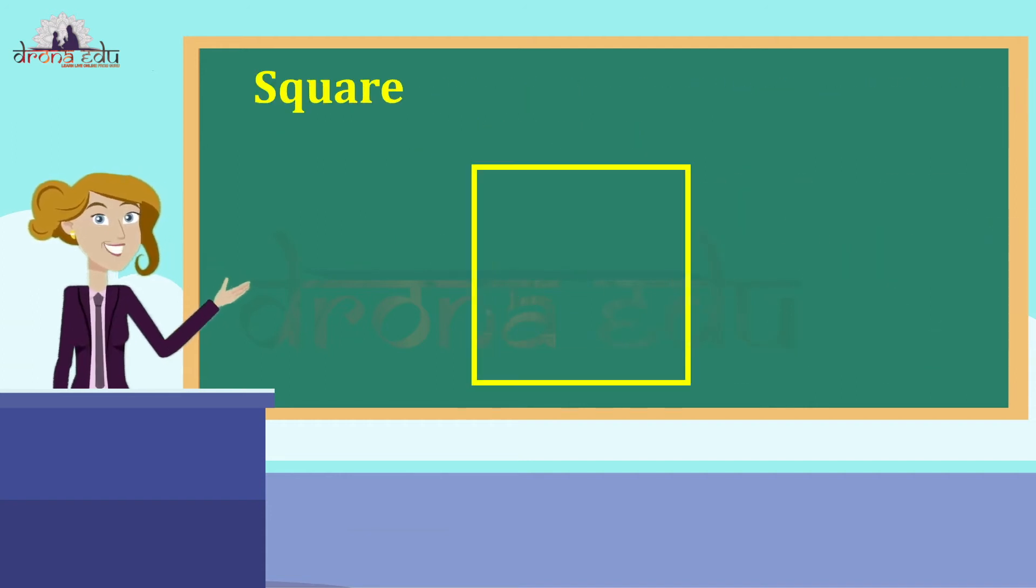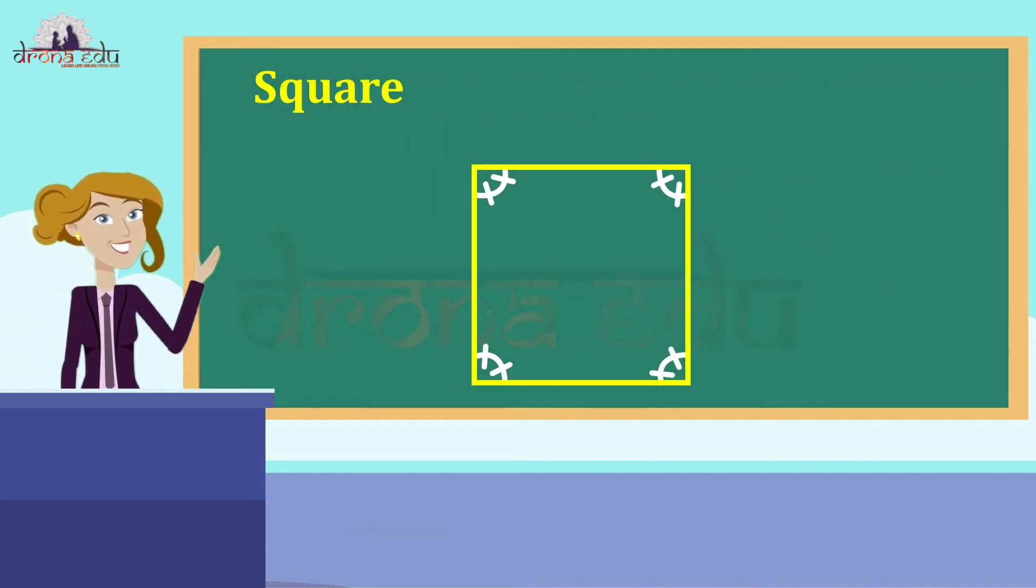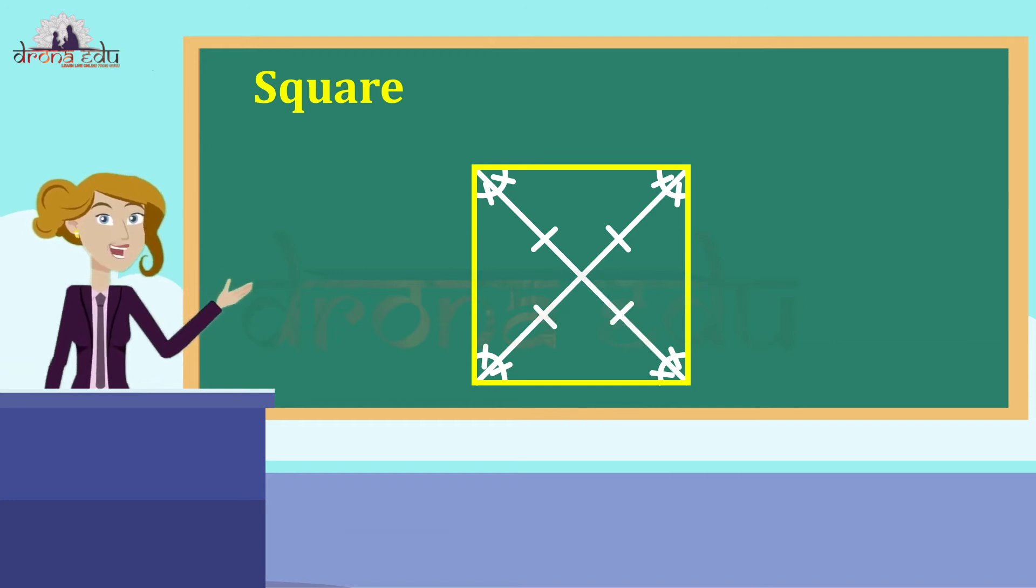A square is also regular because all its sides are of equal length and each of its angles is a right angle. Its diagonals are seen to be perpendicular bisectors of one another.